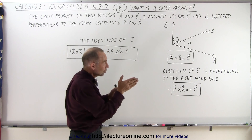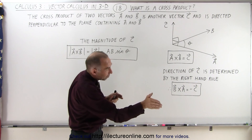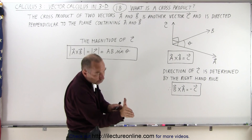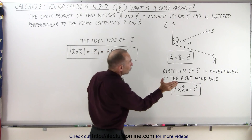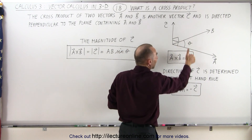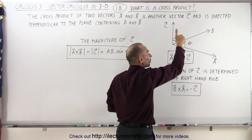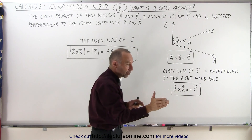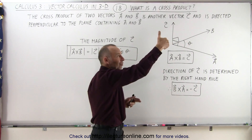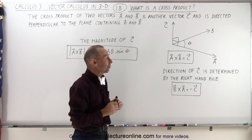What you do is take your fingers and point them in the direction of the first vector A, then curl your fingers into the direction of B, and your thumb will point in the direction of C. So A cross B equals C — that gives you the direction of C.